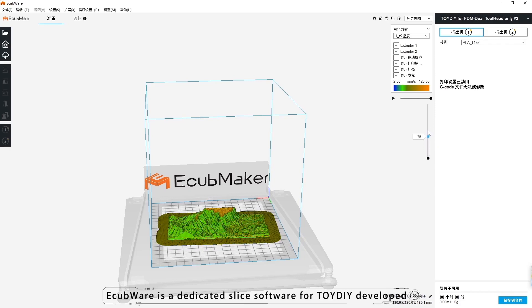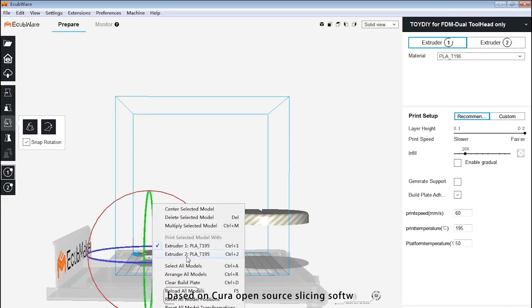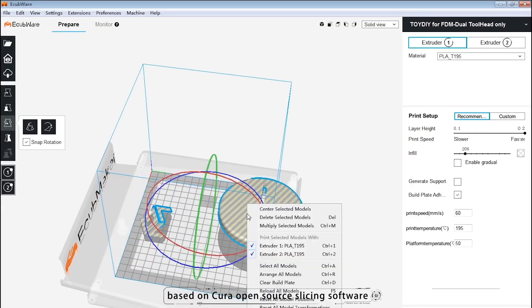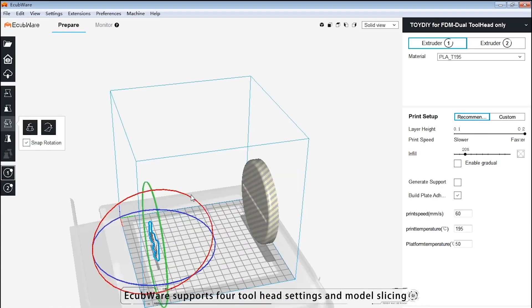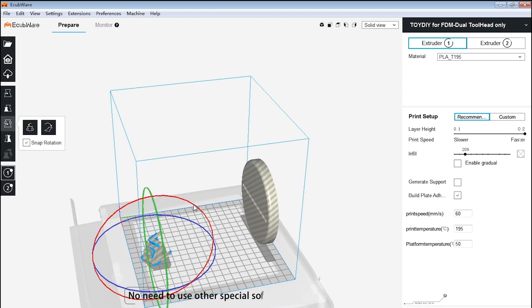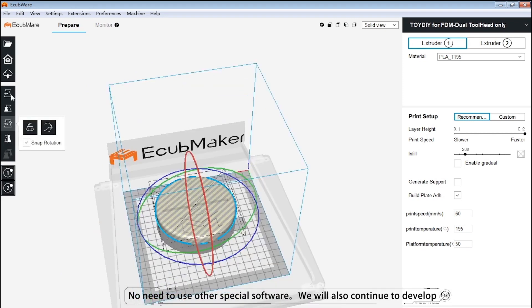Echobware is a dedicated slice software for ToyDIY developed based on Cura open-source slicing software. Echobware supports four toolhead settings and model slicing. No need to use other special software.